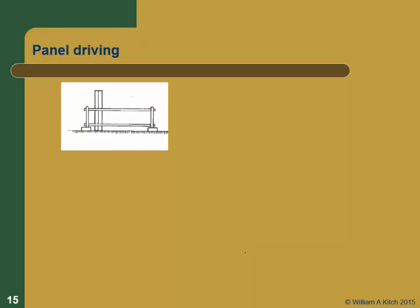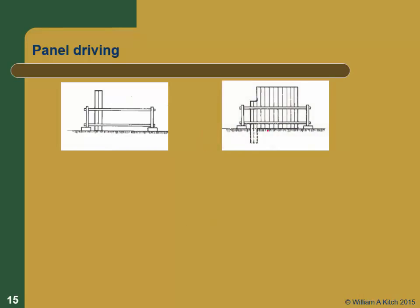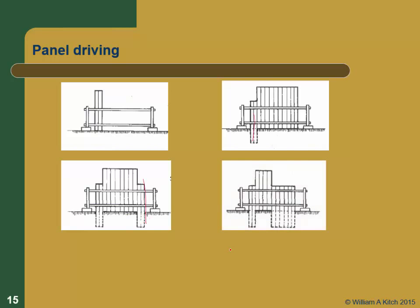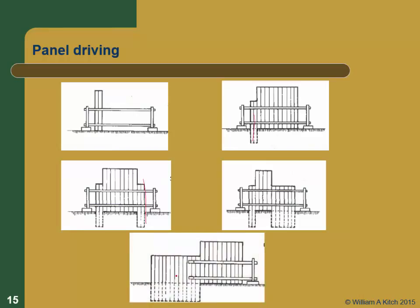There are two methods where you drive incrementally. The first is called the panel method, where you have some sort of guidance system on the ground and you assemble an entire panel within your guides. Then you drive one or two piles on one end, come back and drive one or two piles on the second end, then come back and drive the middle piles. Then you move on to the next panel. This gives you better control — if you can get the two end sets in properly, there's a lot less worry about whether the middle ones wander.